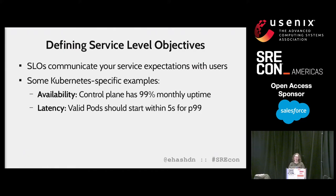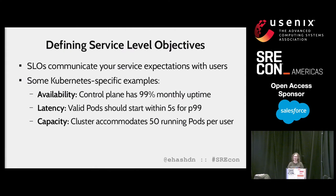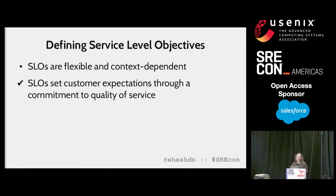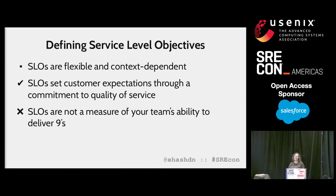For latency, we might say that we expect a valid pod to start within five seconds in the 99% burst case. This means only 1% of pods would take longer to start over some interval. An invalid pod would never start, so we shouldn't make any promises about those. For capacity, we might aim to support up to 50 running pods per user in our cluster. Maybe this corresponds to a cluster namespace or to a specific end user. From these examples, you can see there is plenty of flexibility in declaring your SLOs. When you view them through the lens of setting customer expectations and commitment to quality of service, rather than a measure of your team's ability to deliver nines, I think they are a little less intimidating and a lot more useful.